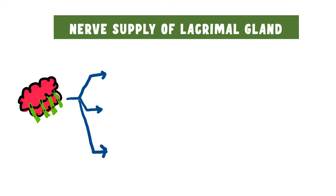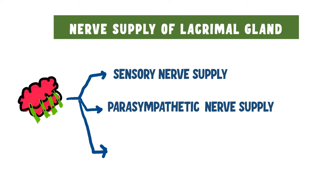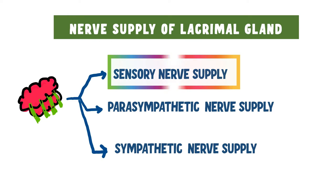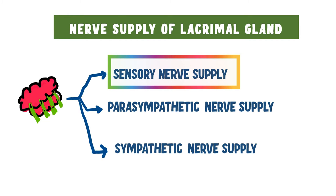The nerve supply of the lacrimal gland covers the sensory nerve supply, the parasympathetic nerve supply, and the sympathetic nerve supply. First let us start with the sensory nerve supply.